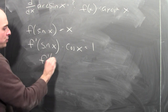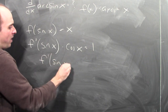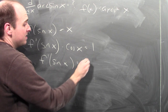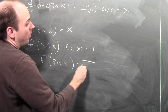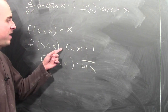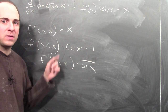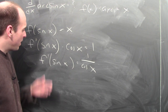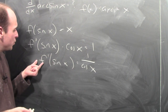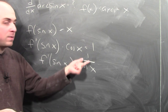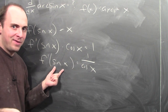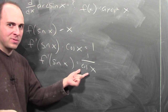What I know now is that the derivative of arcsine at sine x is 1 over cosine x — dividing both sides by cosine. But what I really want is a formula that tells me the derivative of arcsine at some point in terms of that point, not in terms of sine x and cosine.